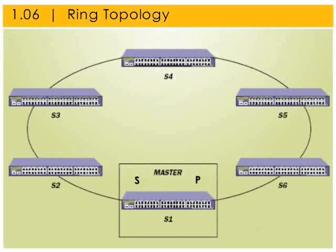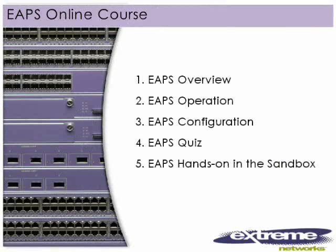Here's an illustration of an EAPS ring topology. The master node has a primary and secondary port; all other switches on the ring are considered transit nodes. Navigate to the EAPS operation section to learn more about how EAPS creates loop-free resiliency in a ring topology. Select the section you would like to view.